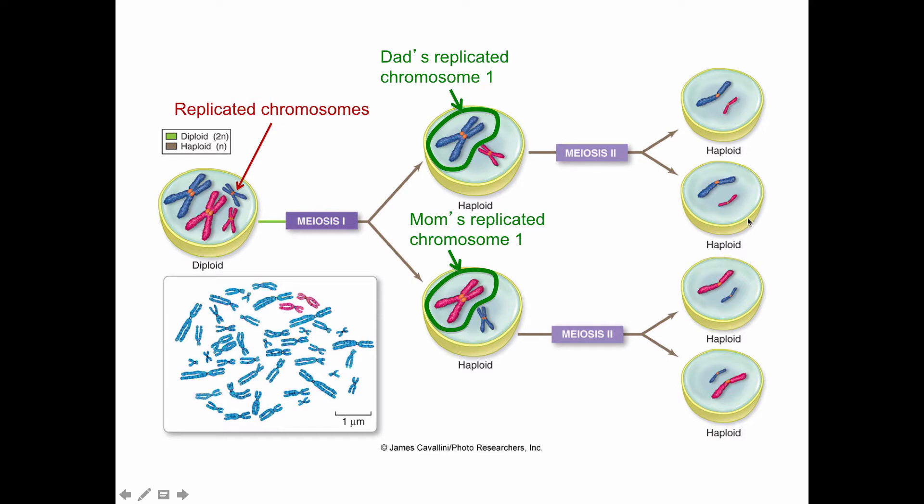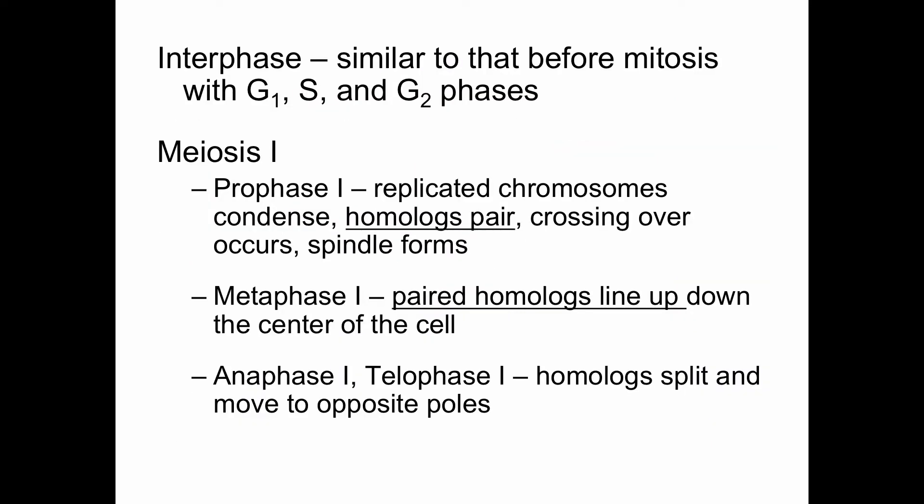In meiosis, there are named phases for each division cycle: prophase one, metaphase one, anaphase one, telophase one for meiosis one, and prophase two, metaphase two, anaphase two, telophase two for meiosis two. One important point: when asked on a test, make sure you specify whether something is happening in prophase one of meiosis one, or prophase two of meiosis two. That's a sticky point — make sure you identify which division cycle you're in.